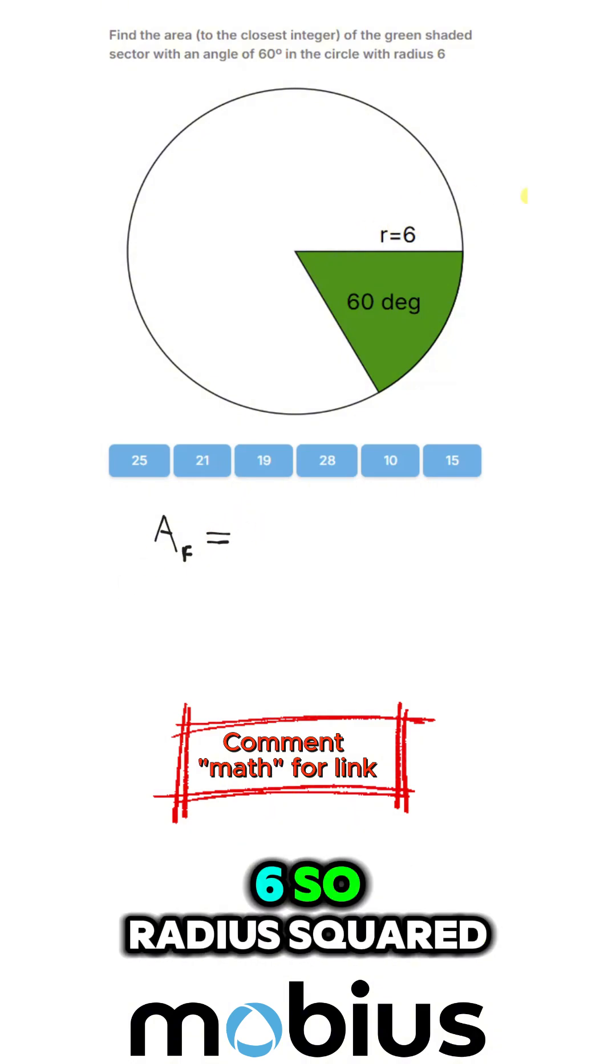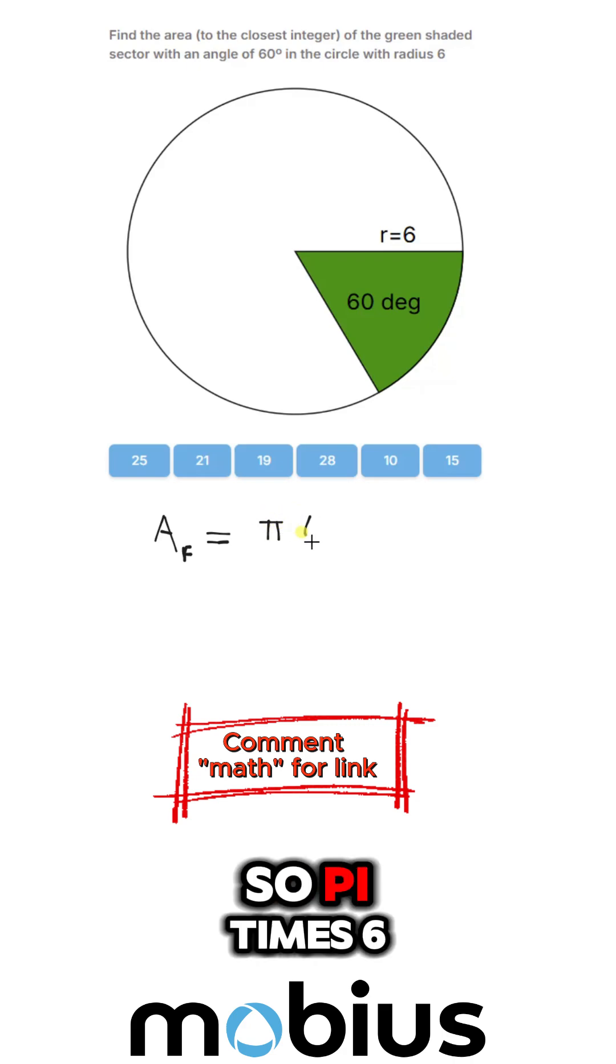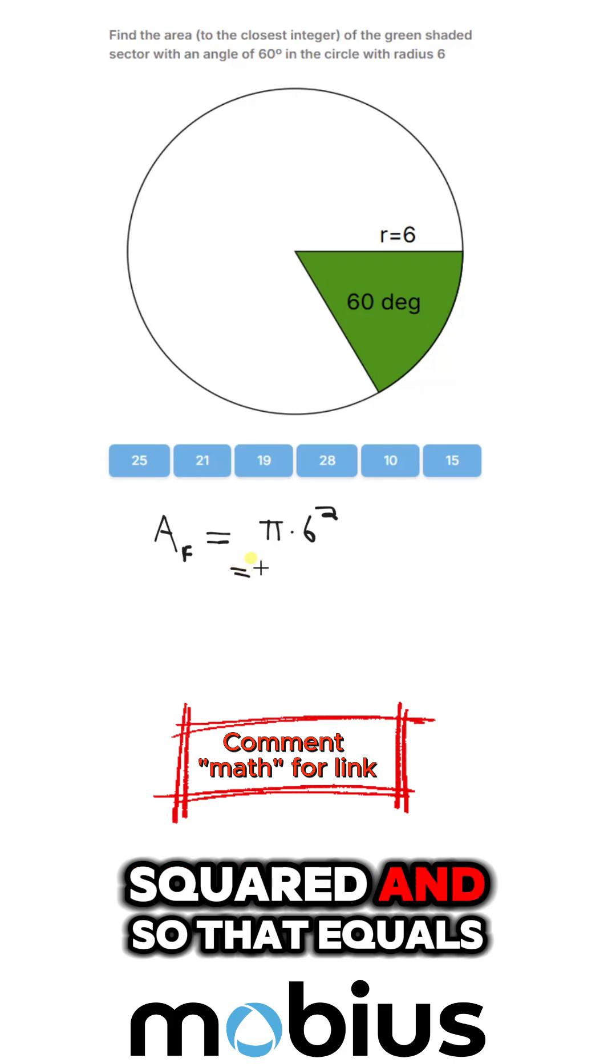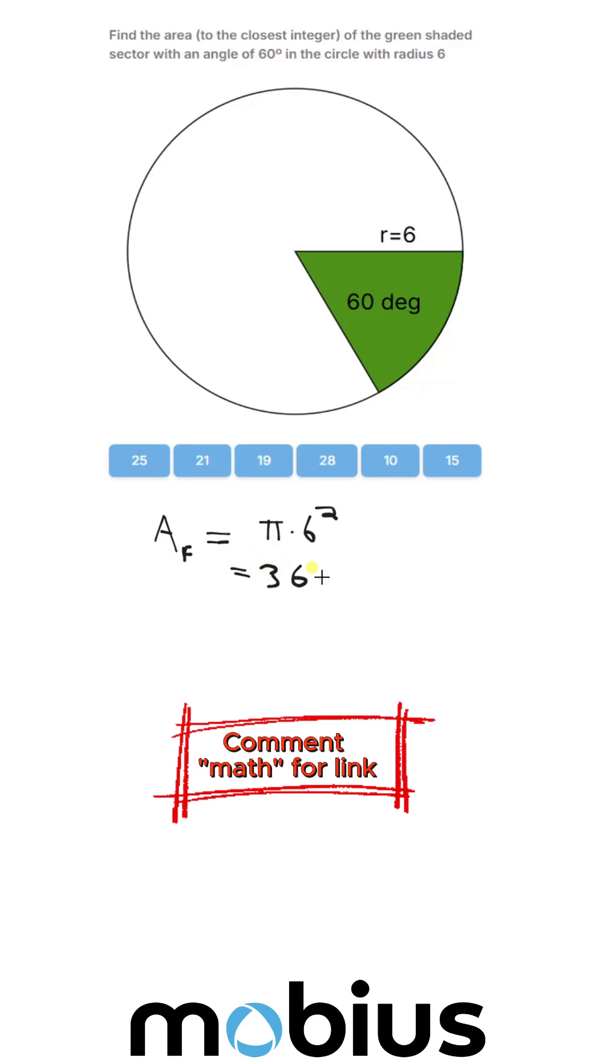So radius squared, π times 6 squared, and that equals 36π for the full circle.